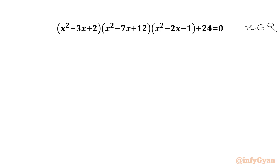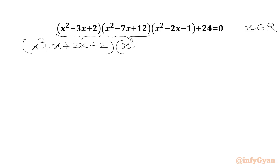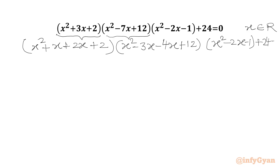Let's get started by factoring the first two brackets. For x²+3x+2, we split the middle term as x²+2x+x+2. For x²-7x+12, we split as x²-3x-4x+12. Then we take x common and 2 common from the first, and x common and -4 common from the second bracket.